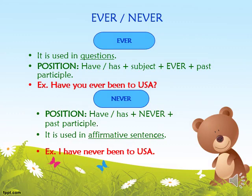We also have ever and never. Ever is used in questions: have or has, then the subject, then ever, then past participle — Have you ever been to the USA? Never is used in affirmative sentences: I have never been to the USA. We cannot use never with not — never replaces the negative: I have never been to the USA.